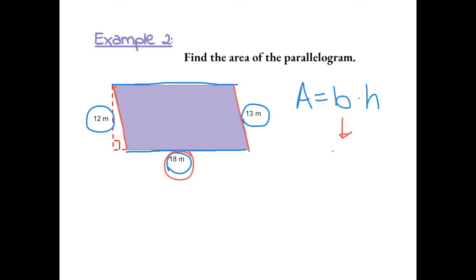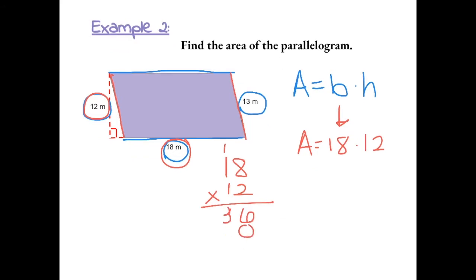We have 18 times the height is 12. So we have 18 times 12, which gives us 16. 2 times 1 is 2, plus 1 is 3. Then we have 1 times 8 is 8, and 1 times 1 is 1. We get 6, 11, and 2. So the area of this parallelogram is 216 meters squared. Area is always squared.